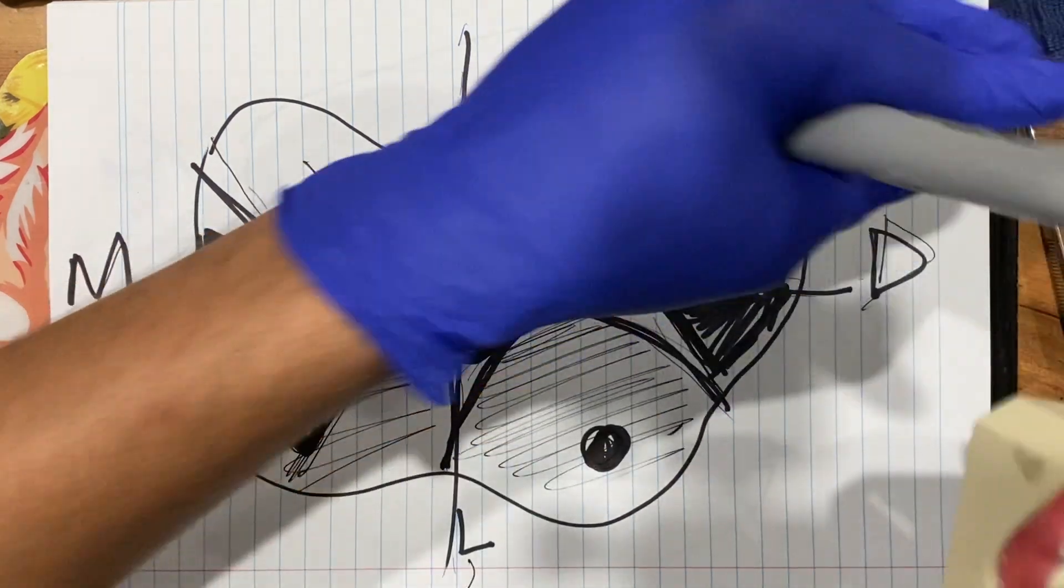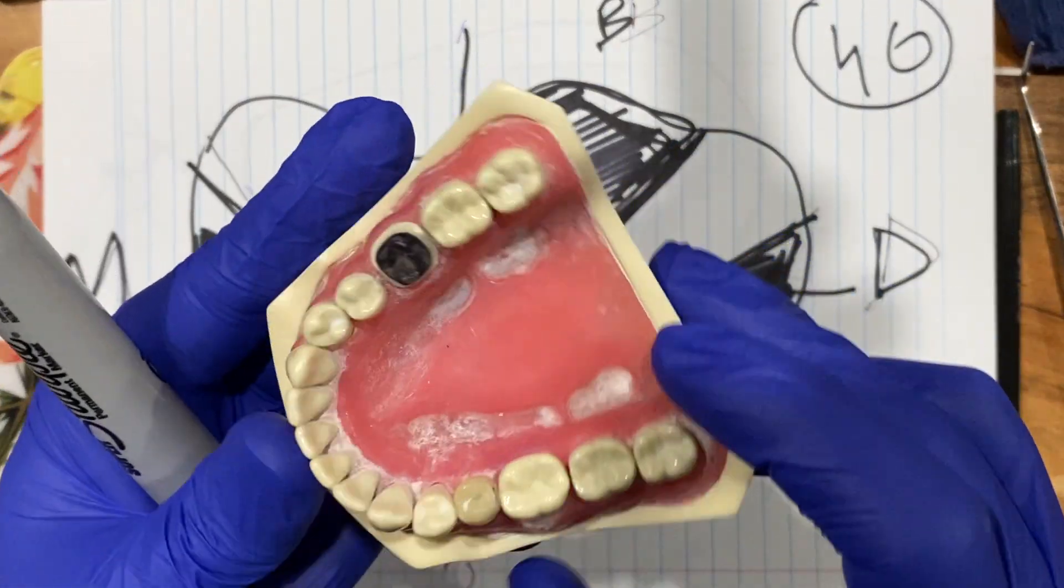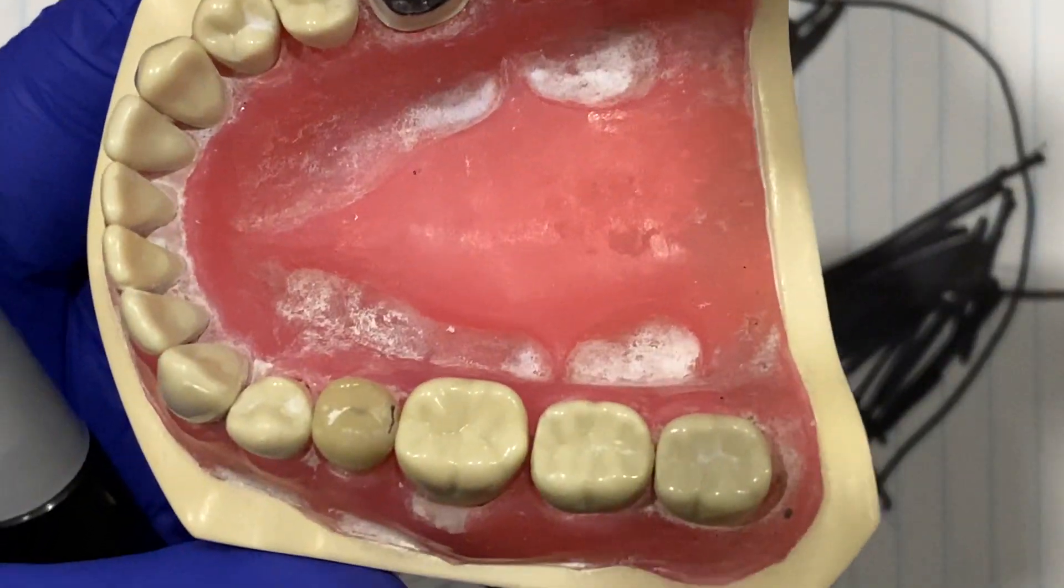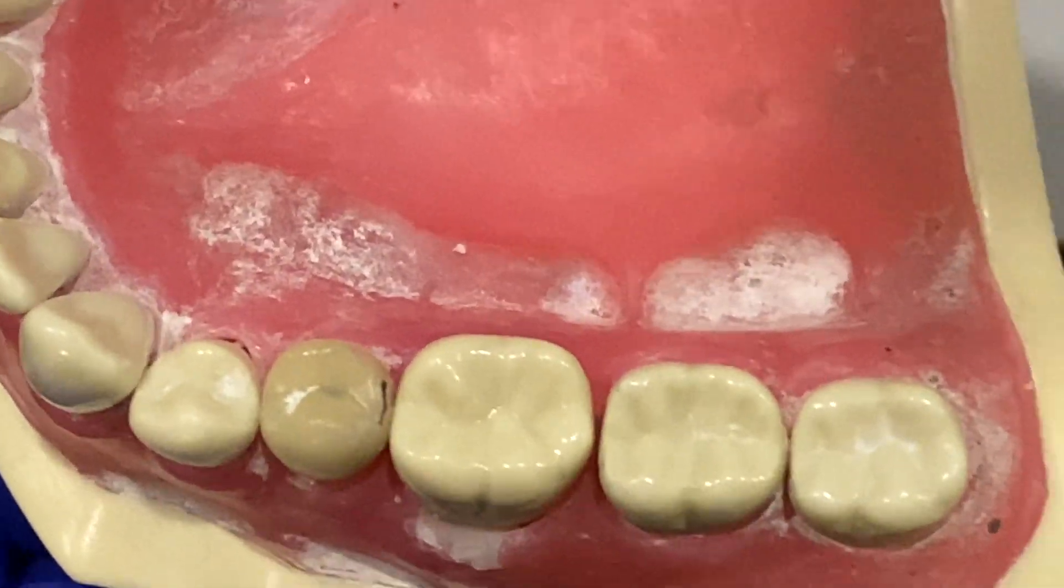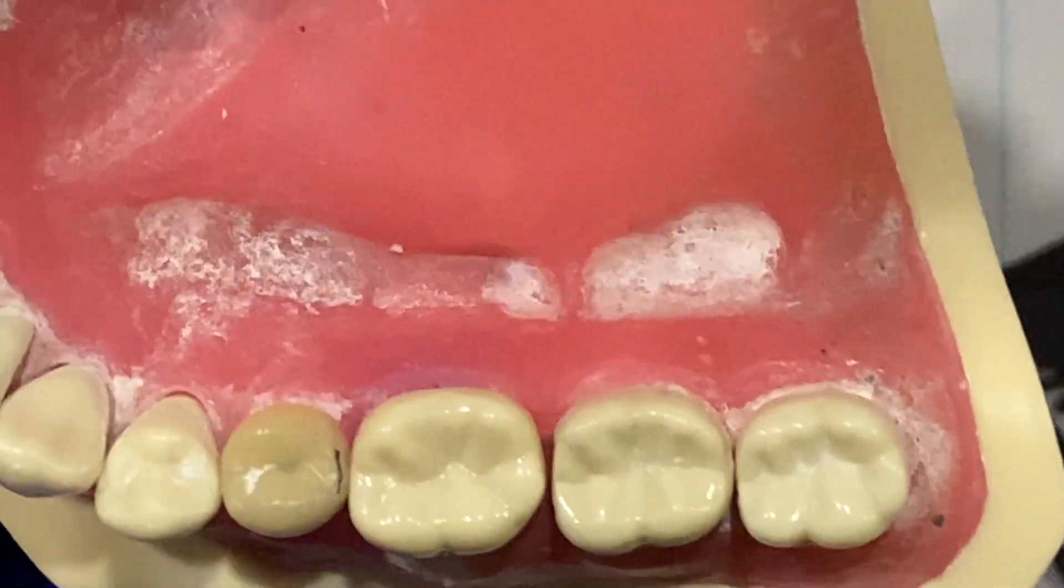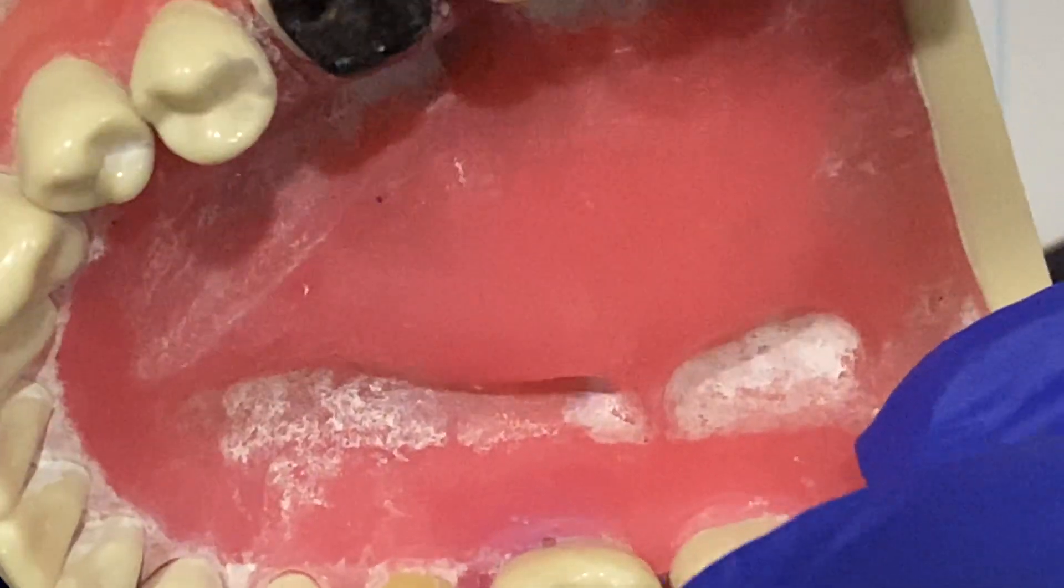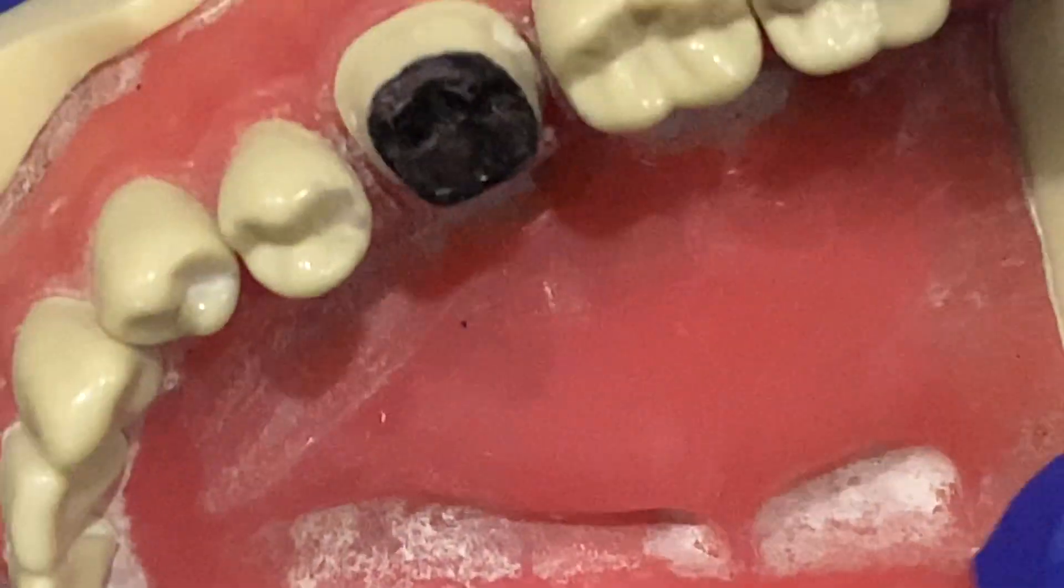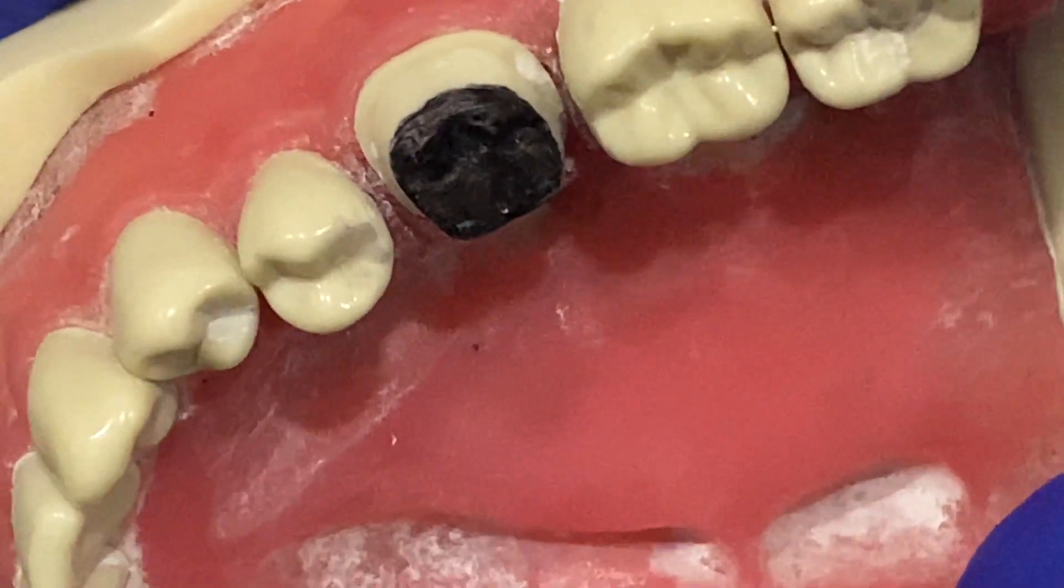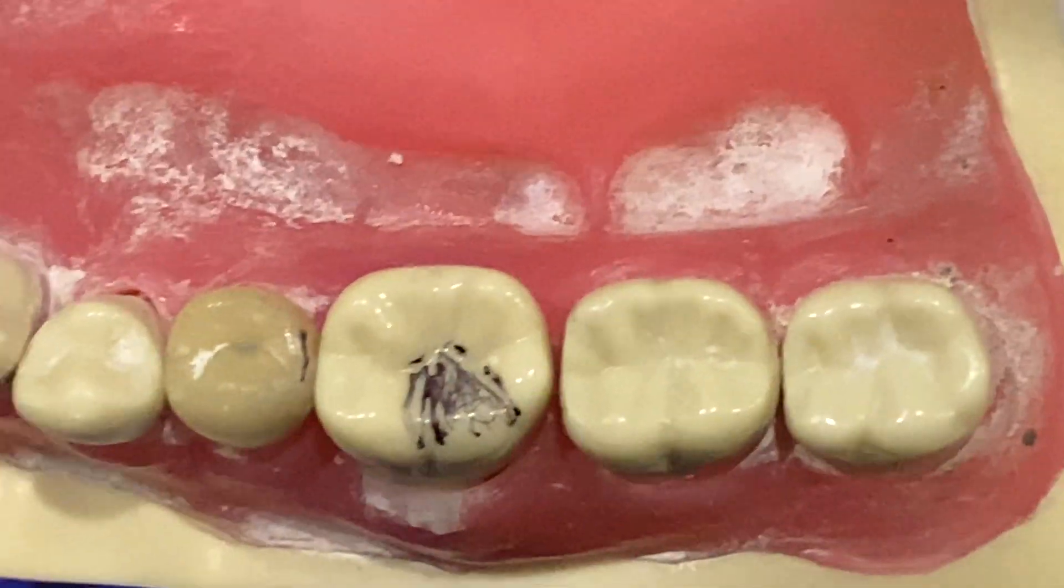Now if I look a bit closer, see if I can zoom in. This is a 3.6, not a 4.6, but just to give you a bit of an idea. Look at where the distobuccal is going. Look at the distobuccal.